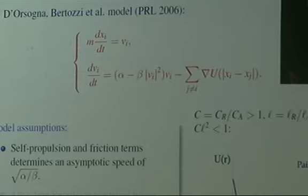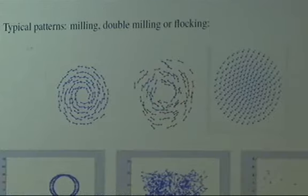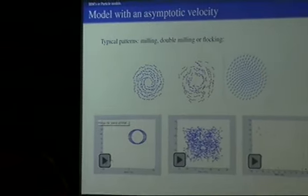It's a very simple model. The self-propulsion and friction fixes an asymptotic speed. You can cook up potentials like that very easily by combining exponentially decaying functions of the radius with good choices of constants. With that choice, you have typically a shape with an inner repulsive core and outer attractive region. It's quite fun to do a lot of computations with this very simple model.